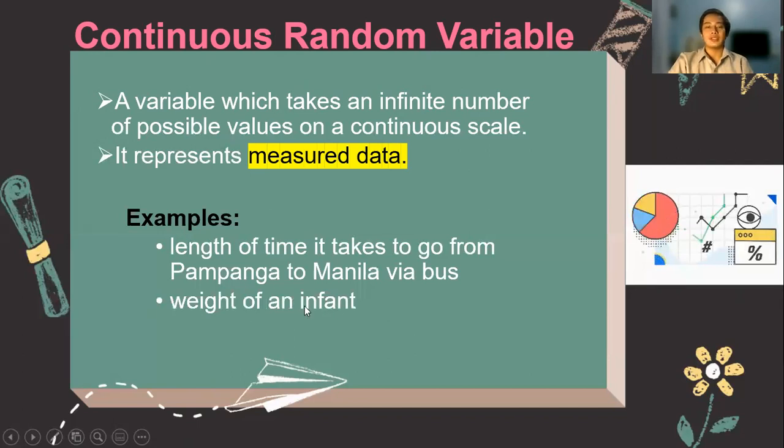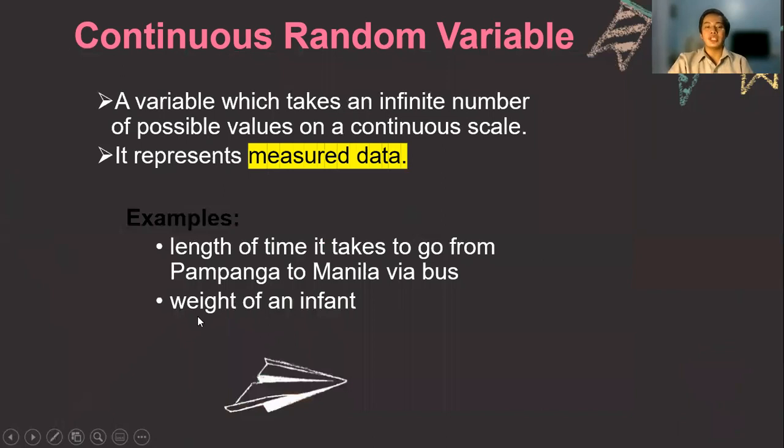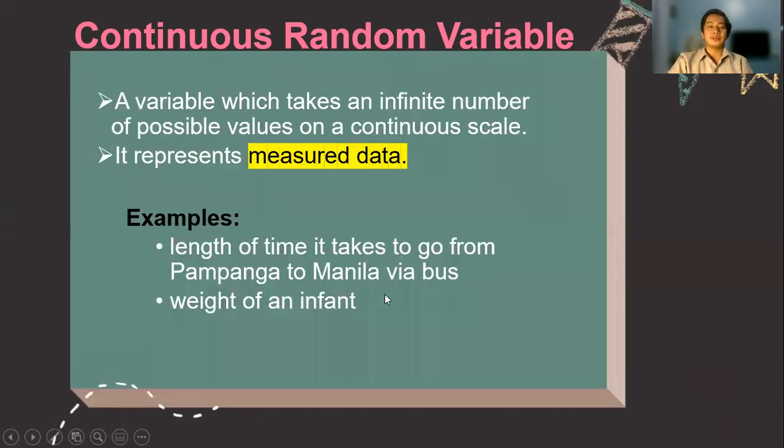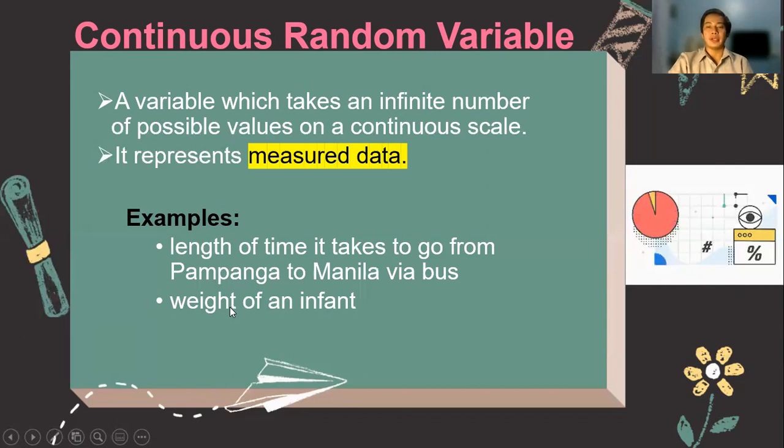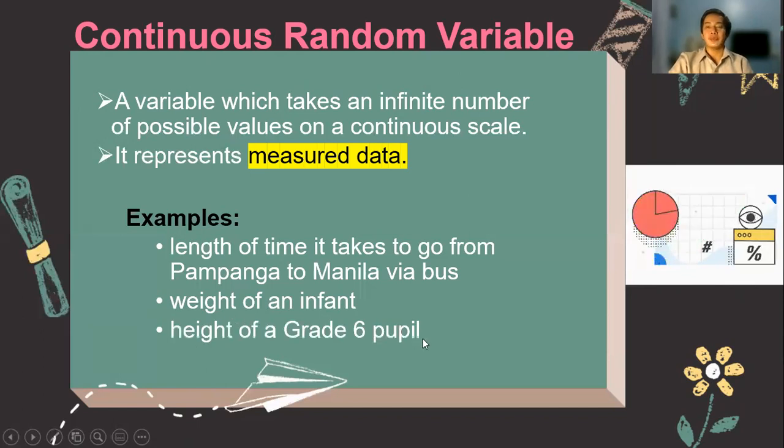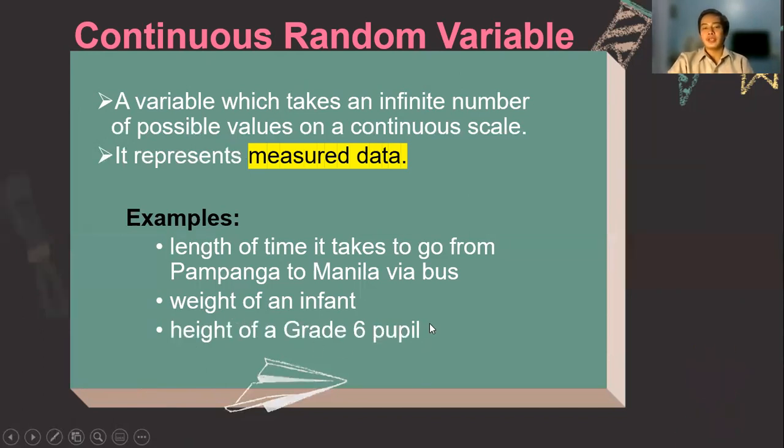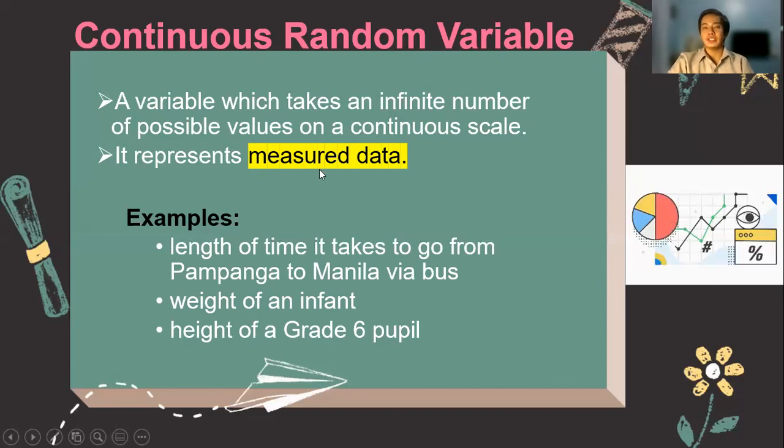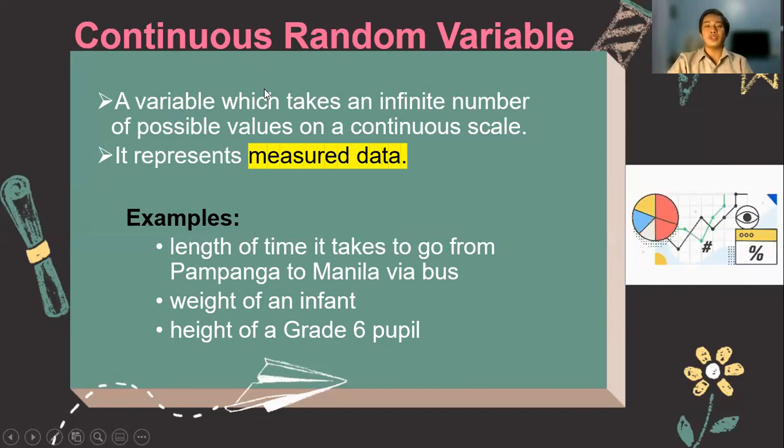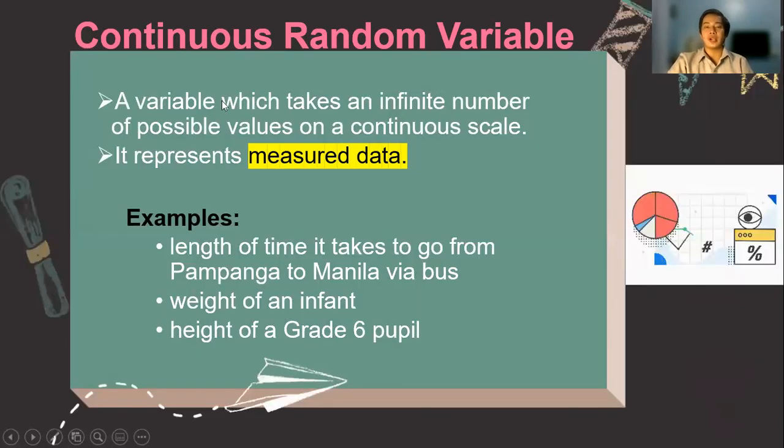The weight of an infant. So since this is a measured data, then this can also be expressed in either decimal or fraction. Like say for example, 8.5 kilograms. The height of a grade 6 pupil can also be described as a measured data. And usually, we can also express it in decimal, like say for example, 5.6 inches. So notice that if the discrete is our whole numbers, then continuous random variables are considered fractions or decimals as well.